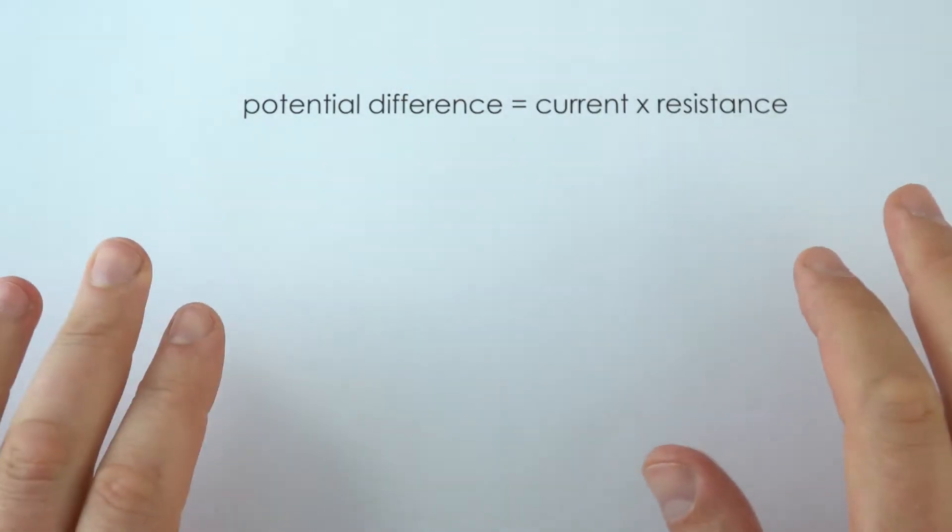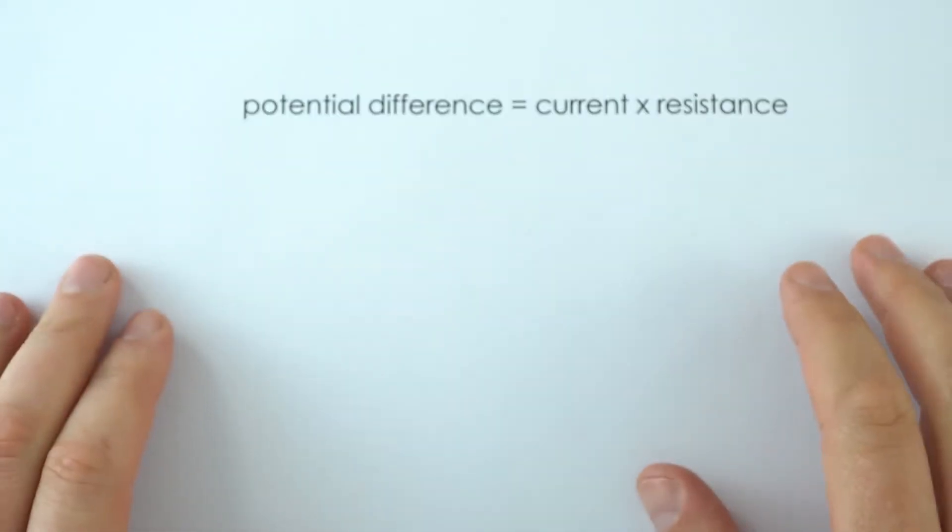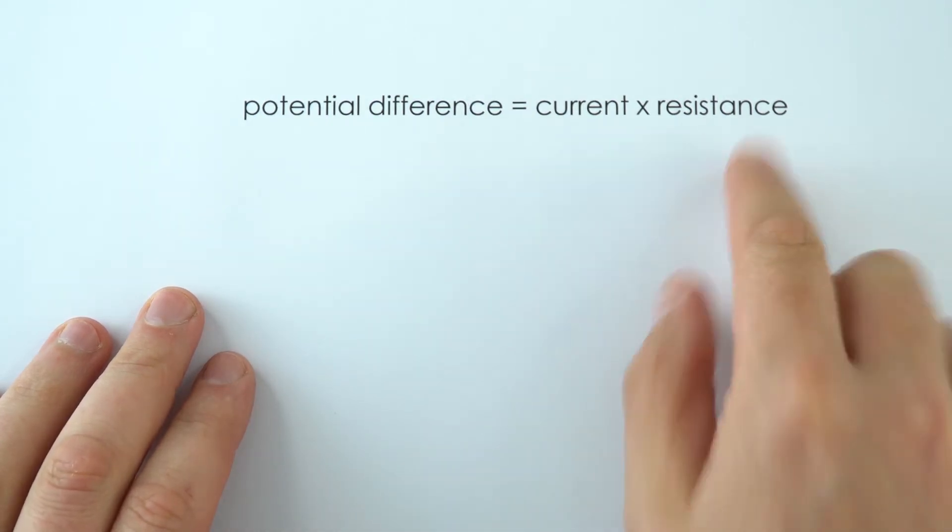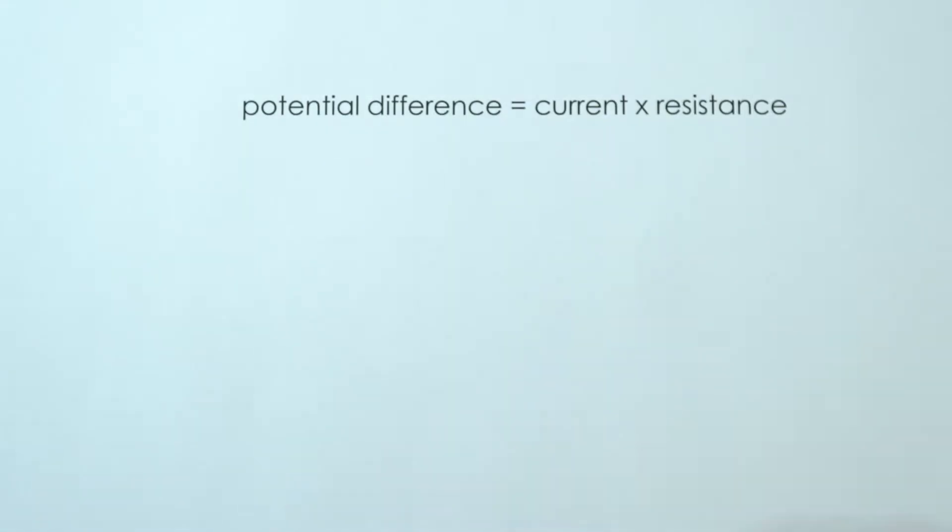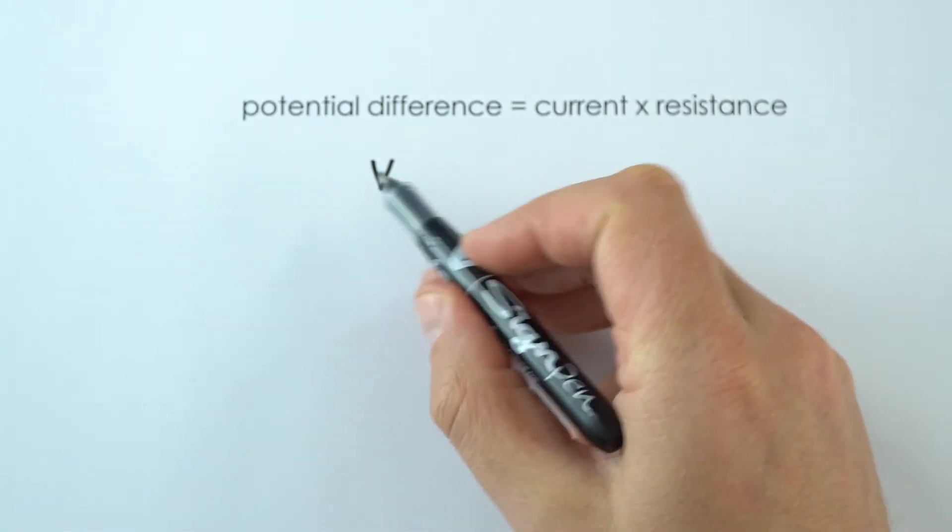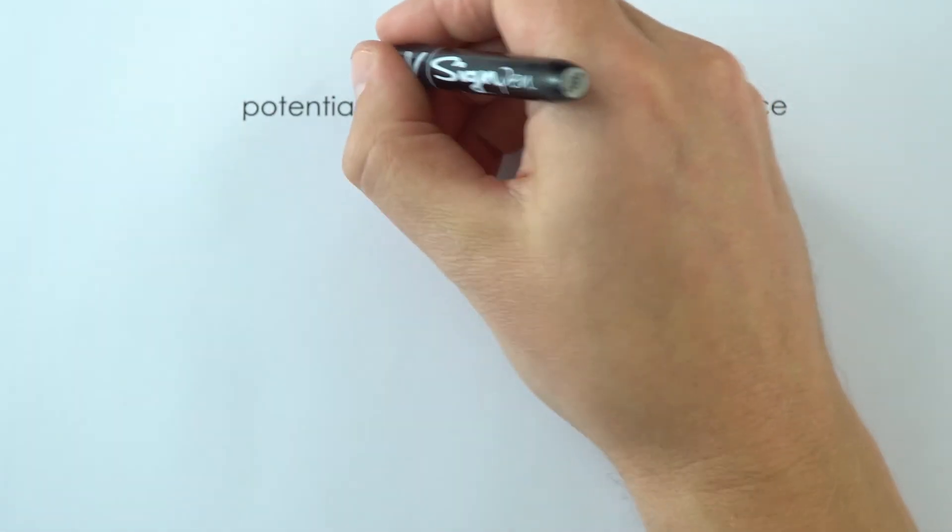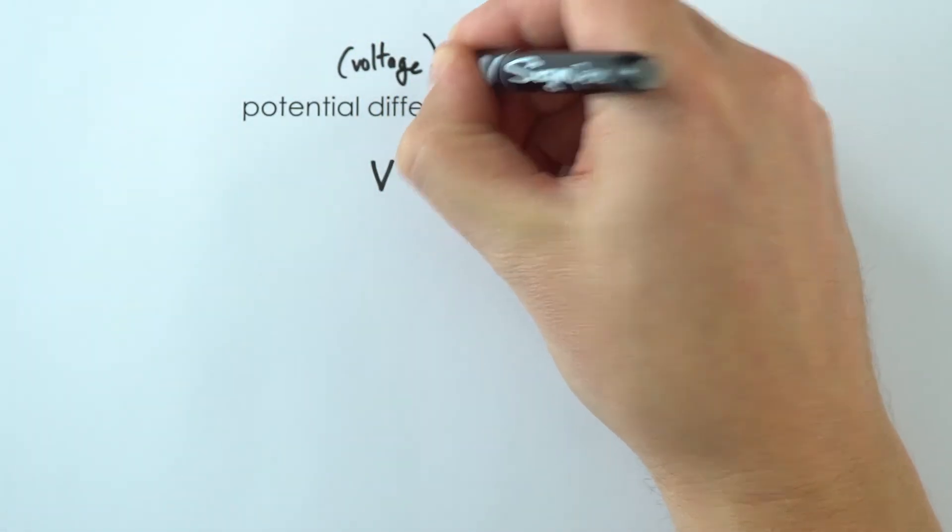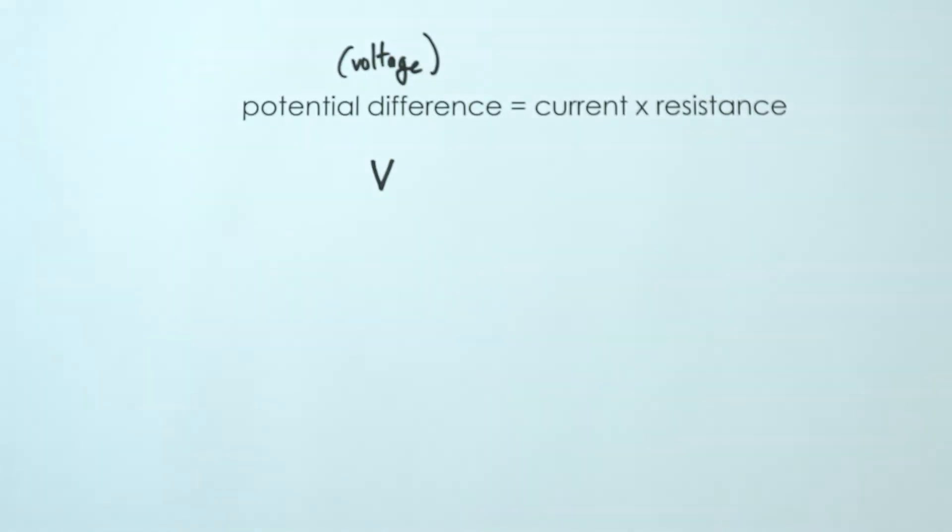So I think that this is one of the most useful equations when it comes to looking at electrical circuits. Potential difference is equal to current times resistance. And basically what we do is we use the symbol V to represent potential difference, which is why it's also known as voltage. Some exam boards call it voltage all the time, other ones, including AQA, call it potential difference. But voltage and potential difference are the same thing.